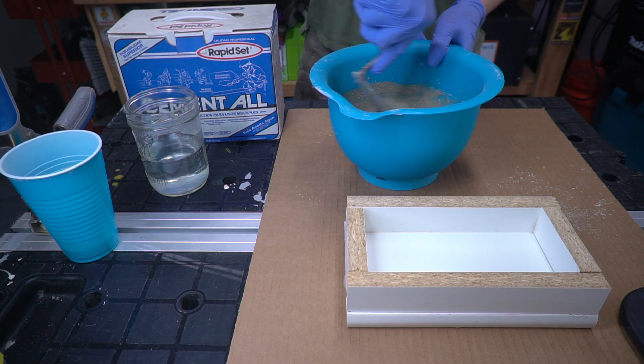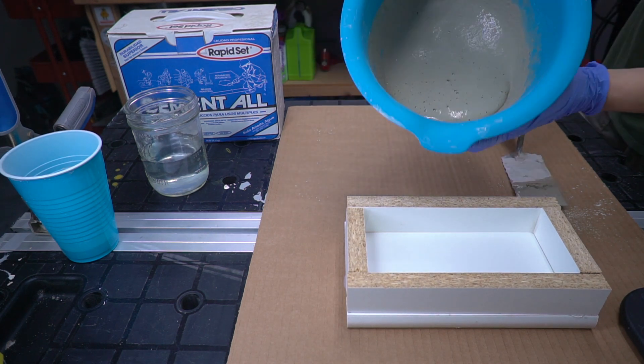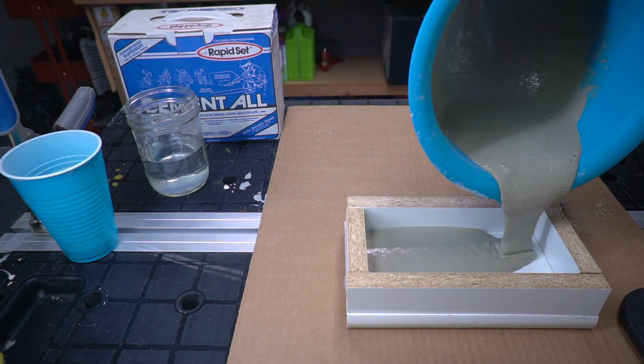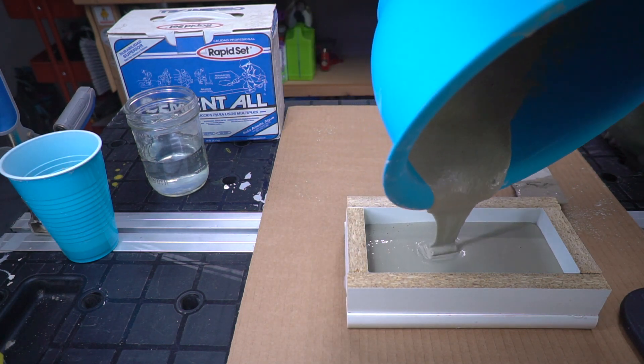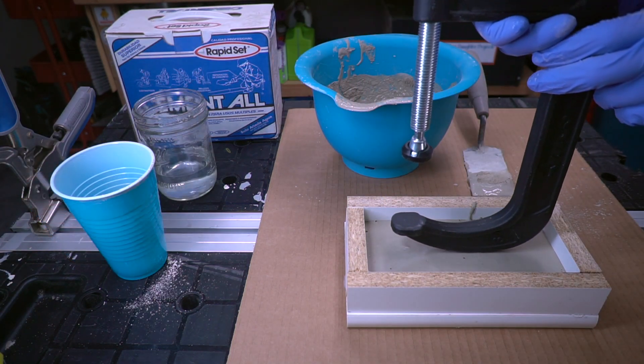Mix up your concrete. We use a fast-setting cement that gains its full strength in one hour. Put the C-clamp in place and pour in the cement.